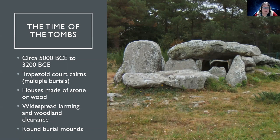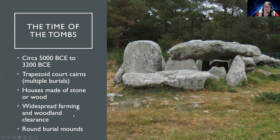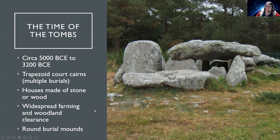At this time, houses were made of stone or wood and there was widespread farming and woodland clearance. Towards the end of this period, after the older burial mounds were blocked off, people started making round burial mounds, suggesting some kind of shift in religious belief or practice. All of this information is sourced from Ronald Hutton's book 'Pagan Religions of the Ancient British Isles.'